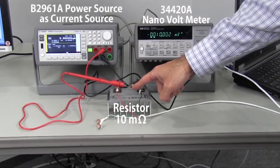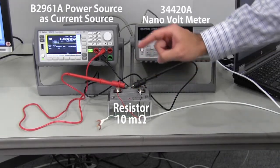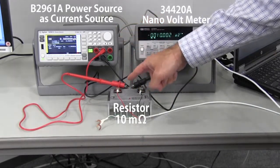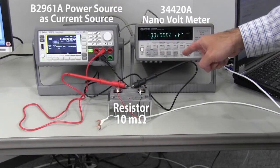This is the 10 milliohm resistor. Connect the current source to these terminals and the nanovoltmeter to these terminals.